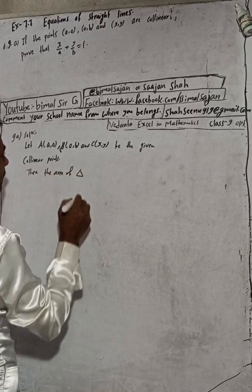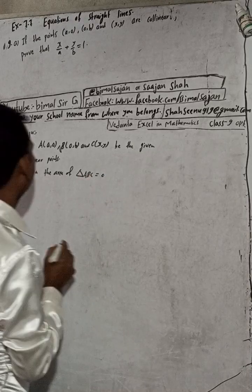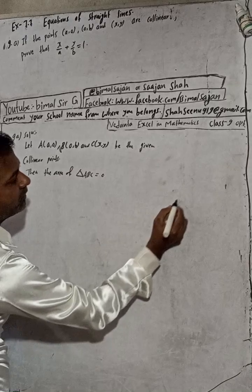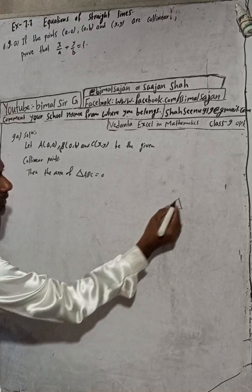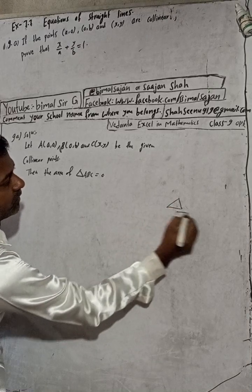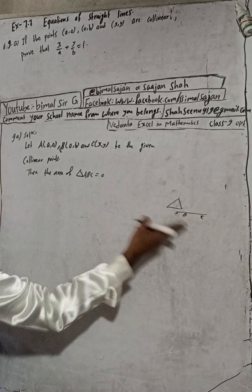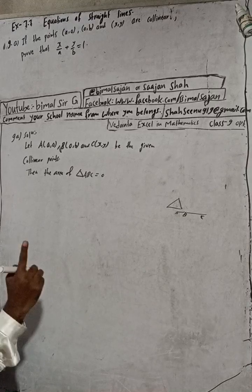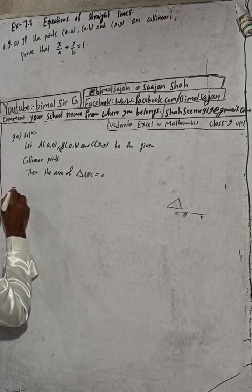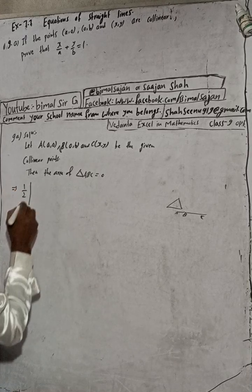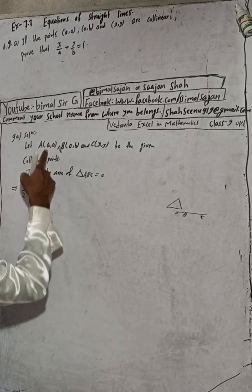When all three points A, B, C lie on the same straight line, they will not form a triangle, so the area of that triangle will be zero. Therefore, the area of the triangle equals zero.